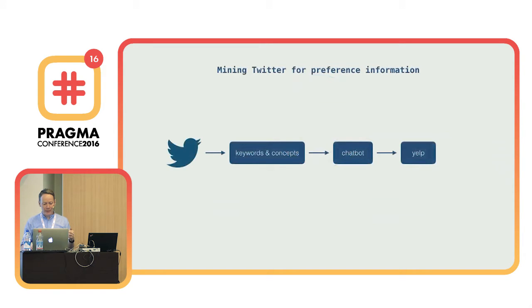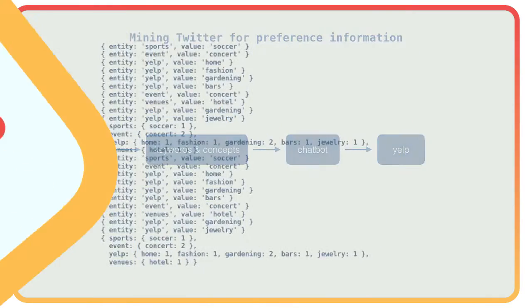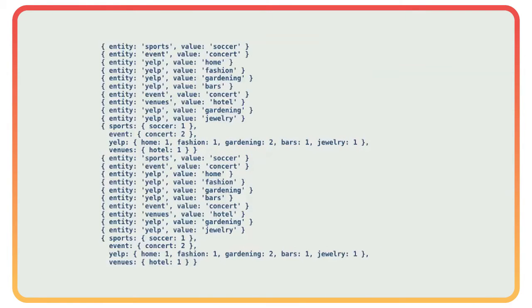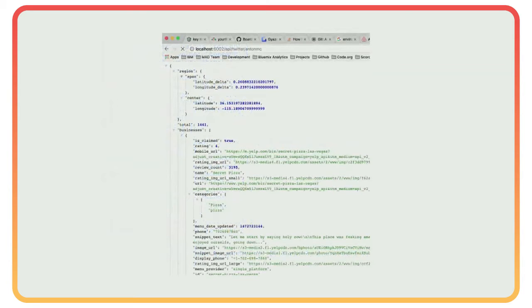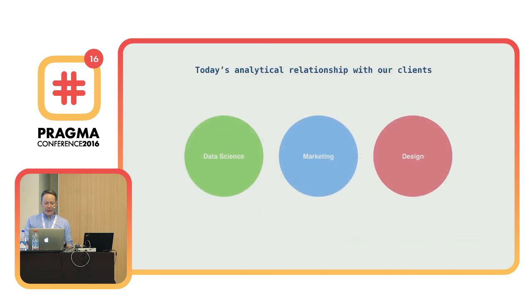I wanted to show some mining of Twitter for preference information, and we have that sort of working. It's stripping out keywords from my tweets and finding things like I like soccer — though calling it soccer is probably a sin in Italy where it's called football — as well as gardening. It found jewelry too, which I'm a bit concerned about. It's picking out keywords from my tweets and finding themes. We've built a chat bot connecting that to Yelp and Foursquare, feeding in those themes and your location to do searches, and it found the best pizza restaurant in Las Vegas when I tested it. This is where data science, marketing, and design are starting to mesh together.